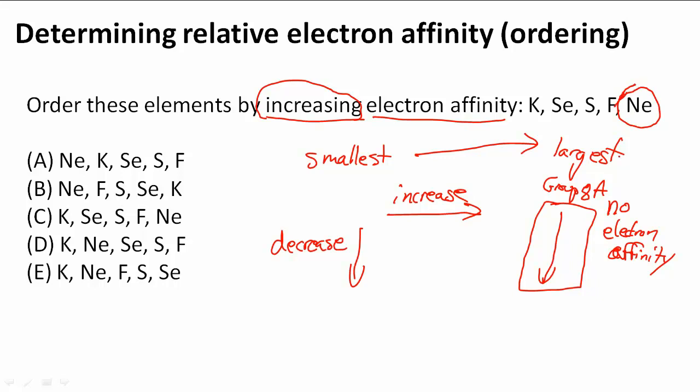So we know that it has no electron affinity. So that means it's going to have the smallest. So Ne is going to be here.